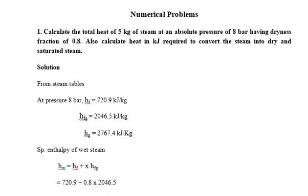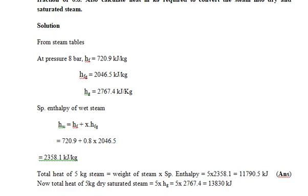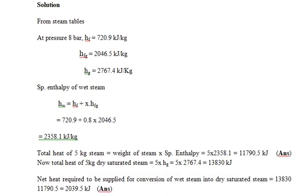First, use the steam table. At 9.8 bar pressure, find the properties: hf, hfg, and hg. Calculate the enthalpy of the wet steam using h = hf + x·hfg. Substituting values, you get 2358.1 kJ per kg. This is for one kilogram; since five kilograms is given, multiply this enthalpy by five to get the total heat.